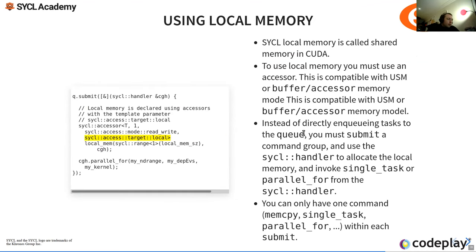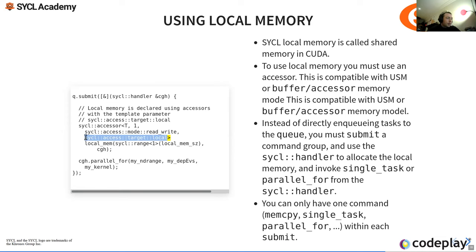Using local memory is really important for writing performant code. In SYCL, local memory is called shared memory in CUDA. To use local memory, you must use an accessor. To define local memory, you construct an accessor with sycl::access::target::local.